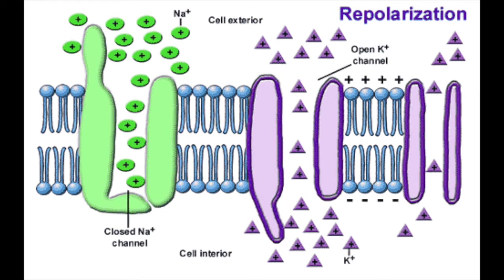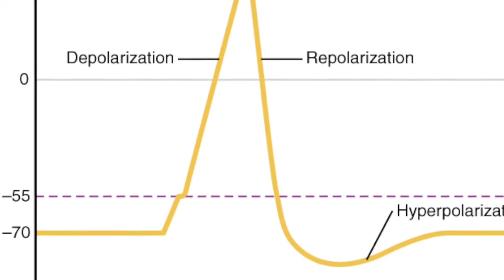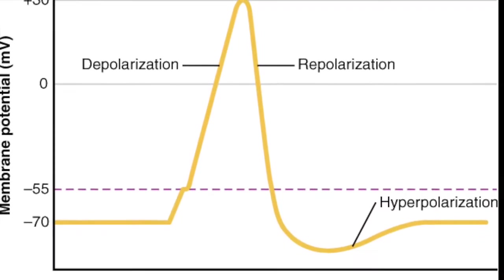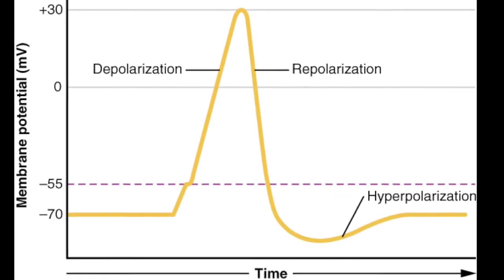As a result, hyperpolarization may occur where too many potassium ions accumulate outside the cell, which creates a membrane potential that is more negative than the neuron's ideal number of negative 70 millivolts.